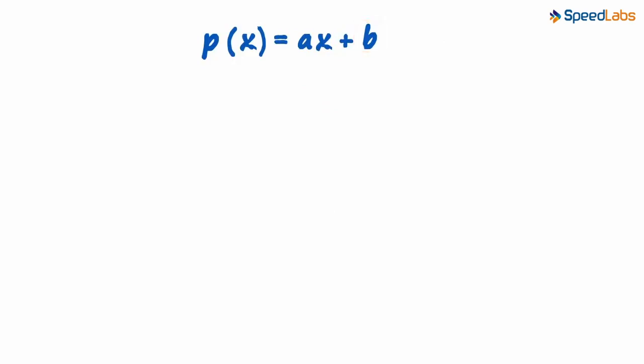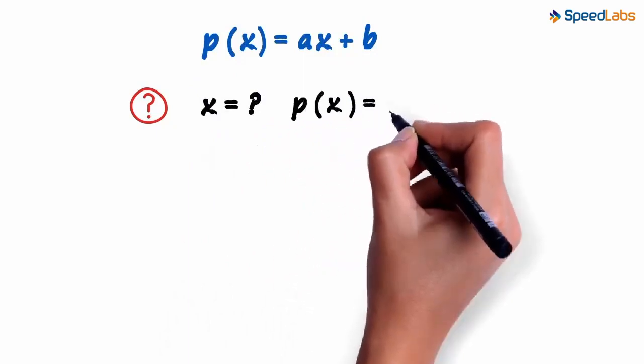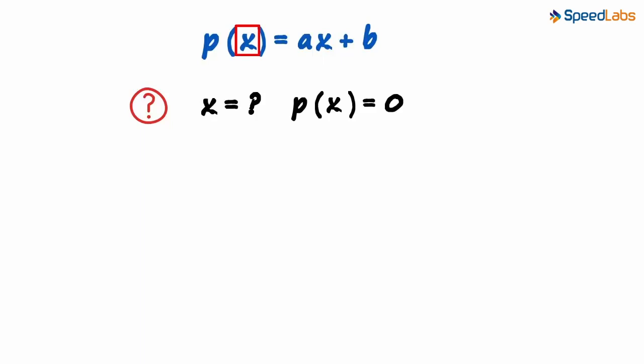Let us try to find the zero of the general form. To find the zero, we ask ourselves the same question: What value of X will give us P of X equal to zero? What value do we use here in place of X to get the overall value as zero? Let us find that value.